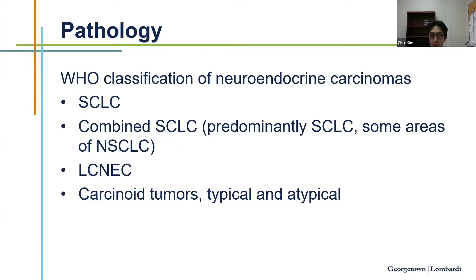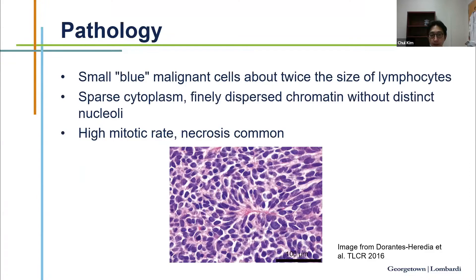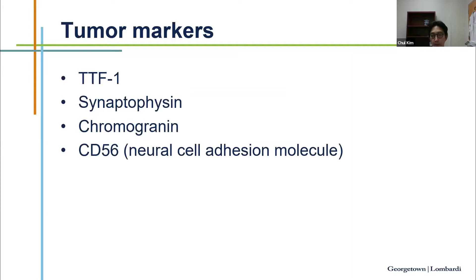The WHO classification includes small cell lung cancer and mixed histology between small cell and non-small cell. Large cell neuroendocrine carcinoma is rarer — about 1–2% of lung cancer cases. These are high-grade, aggressive neuroendocrine carcinomas. Carcinoid tumors — typical and atypical — behave much better than small cell or large cell neuroendocrine carcinoma. Under the microscope, pathologists can make a diagnosis quickly because the cells have a large nucleus, scant cytoplasm, and a high Ki-67 rate. Tumor markers used include TTF-1, synaptophysin, chromogranin, and CD56 — these are the IHC markers you'll see on pathology reports.